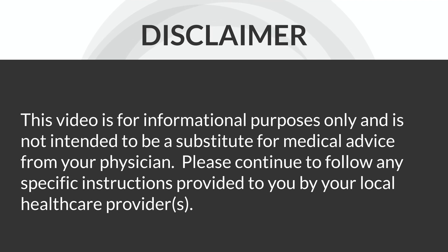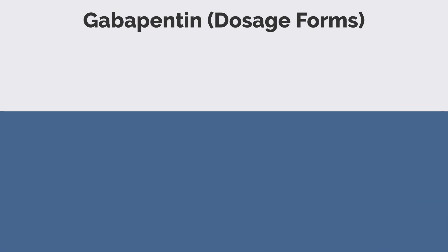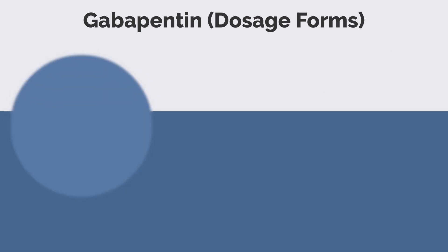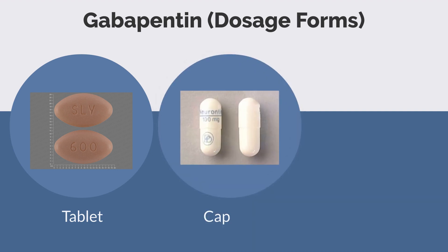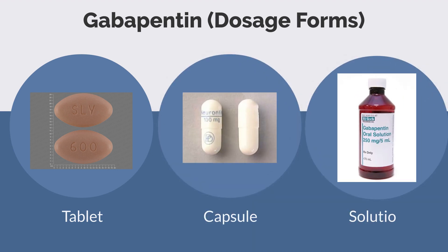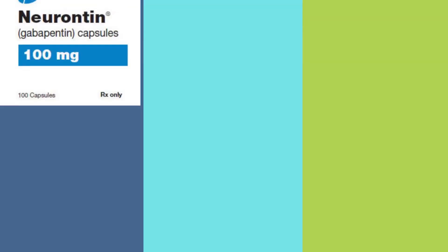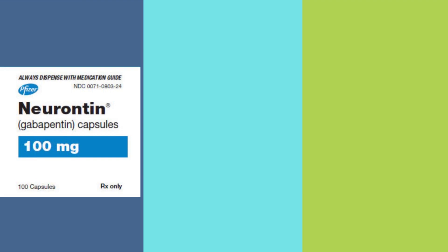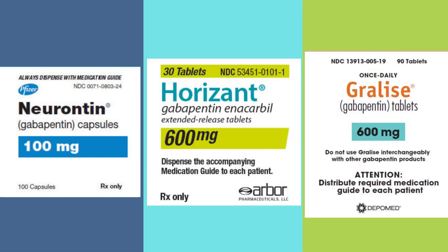Please continue to follow any specific instructions provided to you by your local healthcare provider. Gabapentin is a prescription medication available either as a tablet, a capsule, or solution. It is marketed under the brand names Neurontin, Horizant, or Gralise, and it is available either as an immediate release tablet or capsule or an extended release formulation.